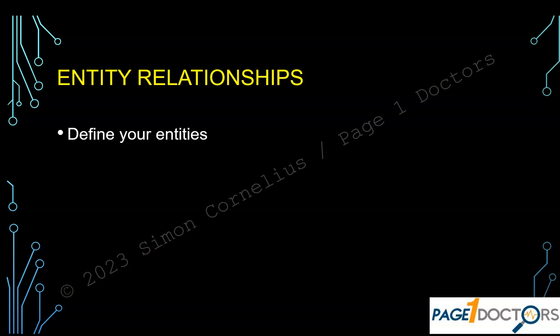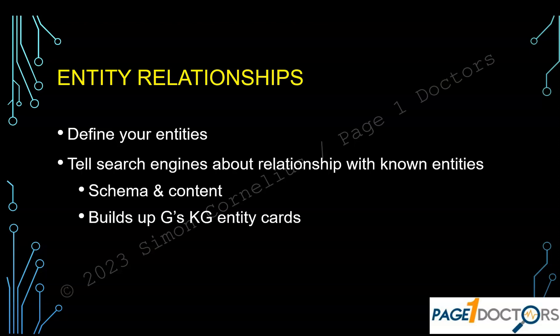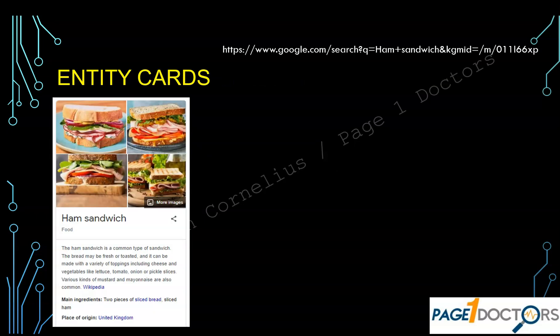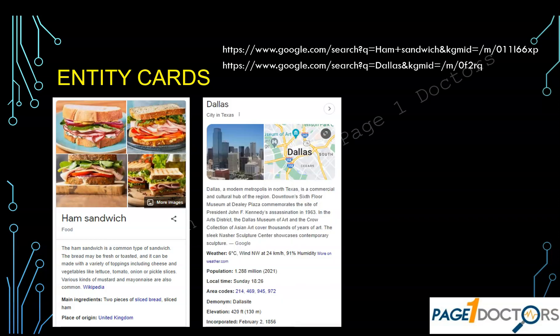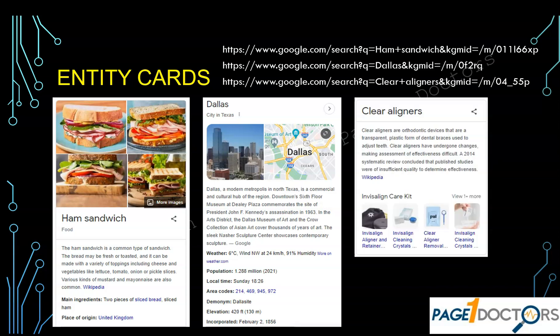Google Lens will tell you what entities it finds in pictures. Entity relationships — step one: define the entities that you want to have on your page, on your website. Tell the search engines: here are my entities and here's how they are related to other known entities. Here's an entity card about a ham sandwich. You can Google 'ham sandwich' and this knowledge panel shows up — it tells you what's in there, it even tells you it was originally created in the United Kingdom. There's also an entity card for Dallas, which is where I live, and an entity card for clear aligners or Invisalign. You can find these in Google just by doing a search.